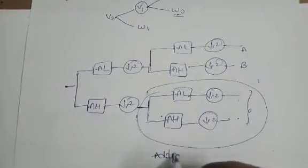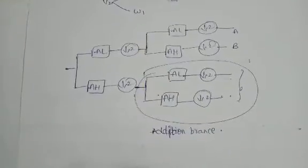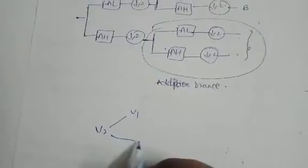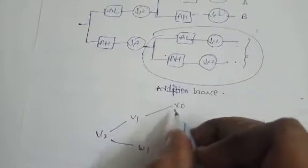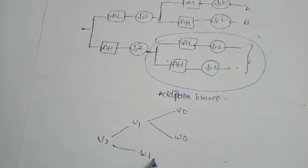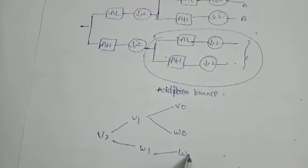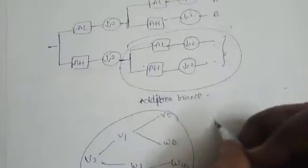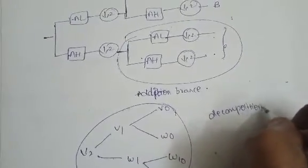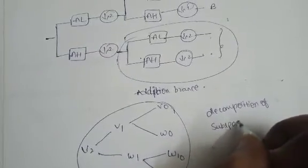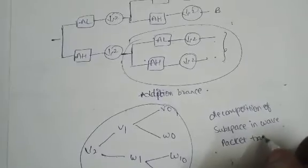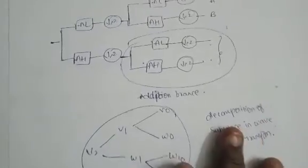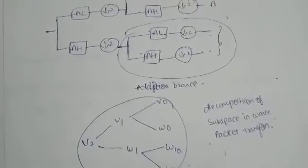This step is the V1/V2 decomposition into W1. The next step is the V0/V1 decomposition into W1. Here we decompose W1 into W10 and W11. This figure is called the decomposition of subspace in wave packet transformation. This is the wave packet transformation technique.